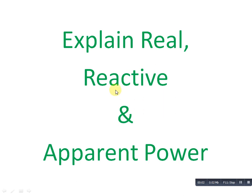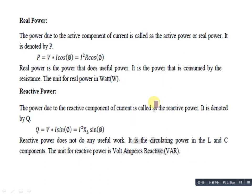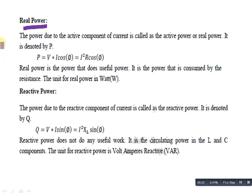In this video we explain real power, reactive power, and apparent power. First, we discuss real power. The power due to the active component of the current is called active power or real power. It is denoted by P. The real power formula is P equal to V into I cos phi.